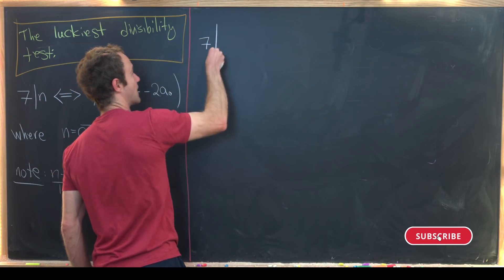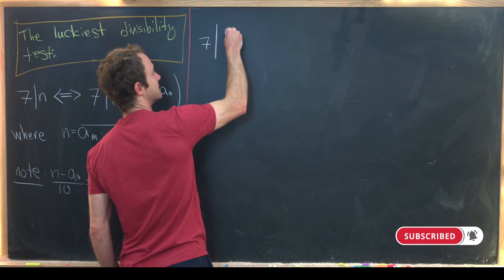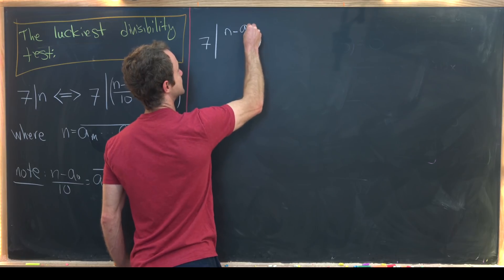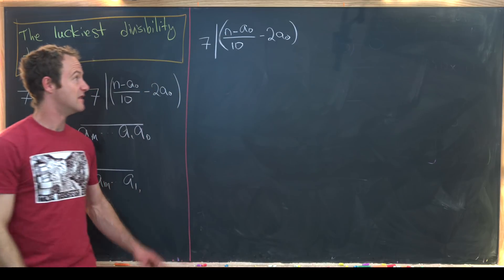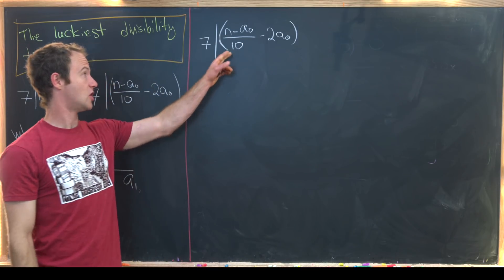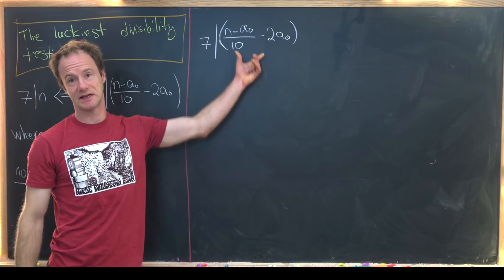So let's first start by noticing that if seven divides n minus a naught over 10 minus 2 a naught, then seven also divides 10 times this.